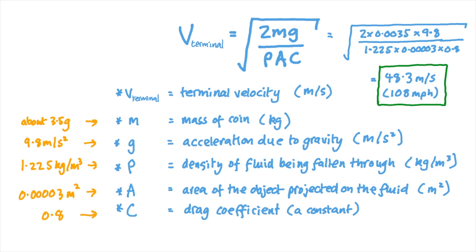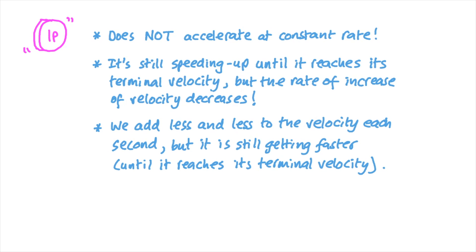I suspect the coin actually flips over a few times when it falls, so my figure is probably an overestimate of the terminal velocity for a UK penny, and theirs is probably an underestimate for the terminal velocity of a US penny. Anyway, the upshot of all this is that the coin doesn't accelerate at a constant rate. As each second goes by, we don't simply add another 9.8 meters per second to the velocity like we would in a vacuum. We add a bit less each second until the coin reaches its terminal velocity. The rate of acceleration decreases with time, and the equation of motion we use doesn't apply.